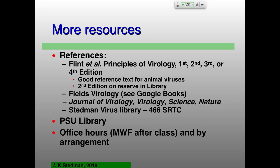There are other ways to teach virology. One of those is the general mechanisms approach — replication, assembly, etc. Flint's Principles of Virology, currently in the fourth edition, is a great reference for that — it's also two volumes and about $300, so I decided not to use it for this course. The second edition I'll have on reserve in the library. It's a really good reference text for animal viruses but doesn't get into viruses infecting microbes anywhere near as much.